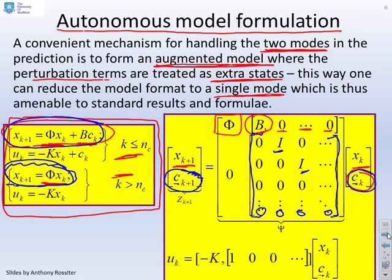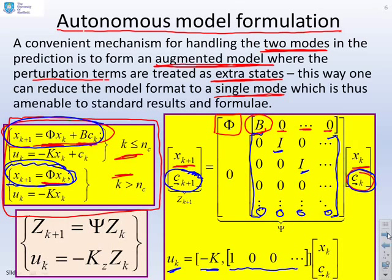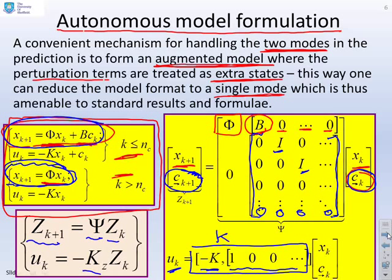And therefore, this expression at the top is now the same as this expression here. So this autonomous model formulation allows us to capture both modes in a single state space model by augmenting the state to include these c future terms. Now, if you wanted to get the actual control law, UK is minus k comma, and you'll see 1000 times xk c future k. So I've got an autonomous model formulation, which basically captures both modes. Now for convenience, I can now use this augmented state. I'm going to call it capital Z, my augmented transition matrix psi. And then I've got this kz, where this matrix down, this is what I'm calling kz. So I've now got a simple state space representation of my dual mode predictions.